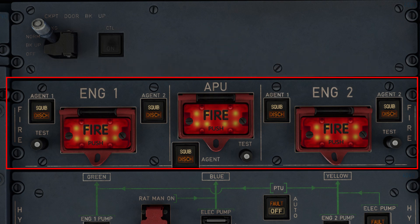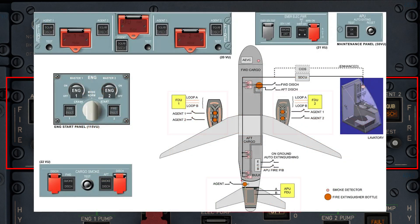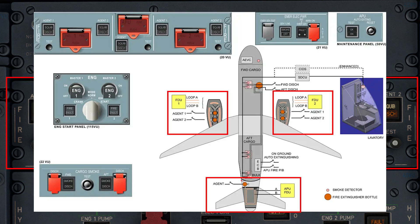Let's start with a brief explanation of the fire detection system within the aircraft. Each engine, as well as the APU, has two identical fire detection loops, A and B, that assist the aircraft in determining the presence of a fire. Normally both loops must detect a fire for any sort of warning to be produced, unless of course the aircraft recognizes that one of the loops is malfunctioning, in which case detection of fire from a single loop would be enough to trigger a warning throughout the flight deck.